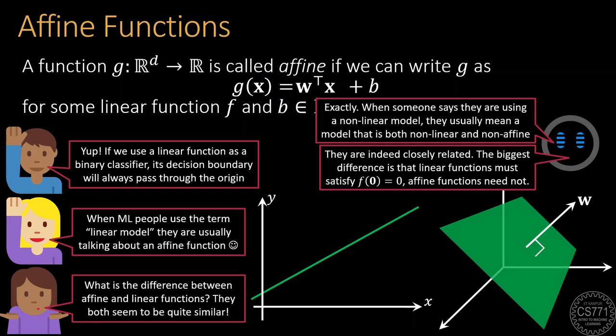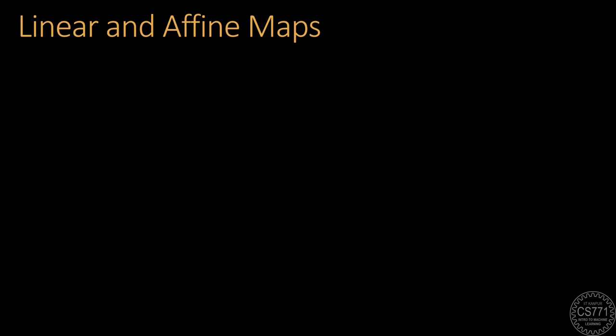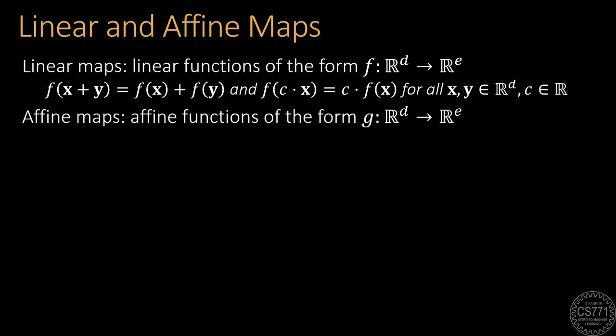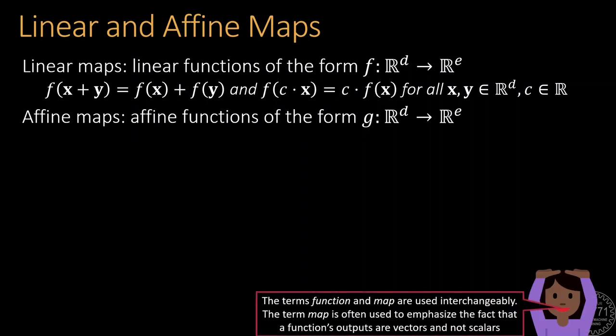Similarly, today we will learn about non-linear models that will be non-affine as well. Another somewhat confusing bit of nomenclature is the concept of a map. A linear map is a linear function whose outputs could be a vector instead of a scalar. It must satisfy additivity and homogeneity just as before. Similarly, affine maps are just affine functions with possibly vector outputs. In fact, the terms function and map are also used quite interchangeably.